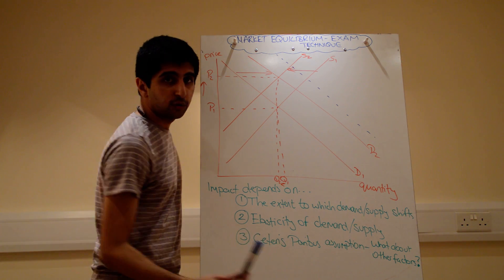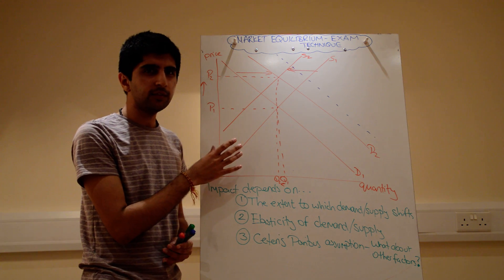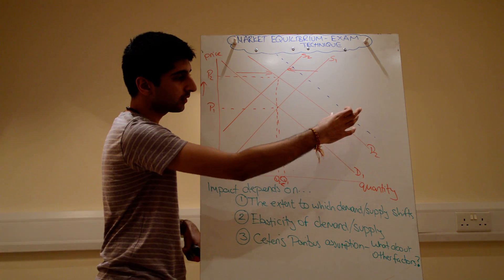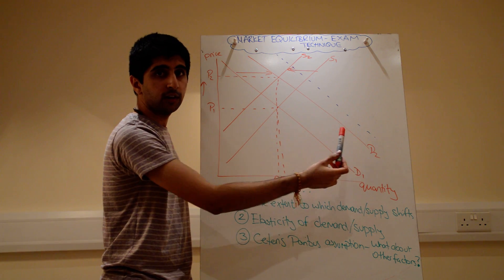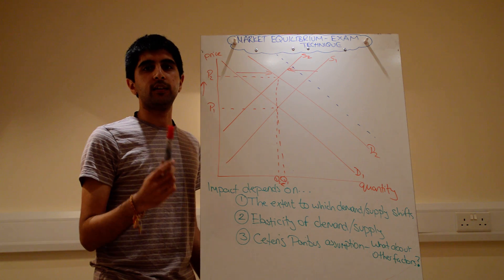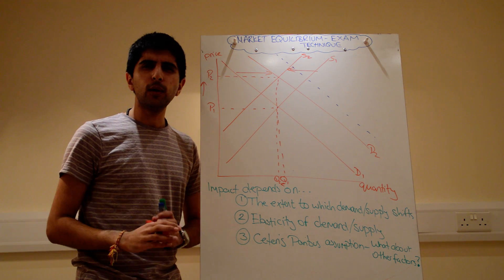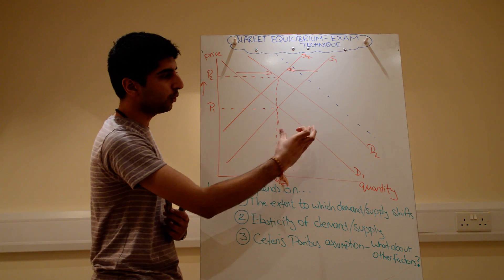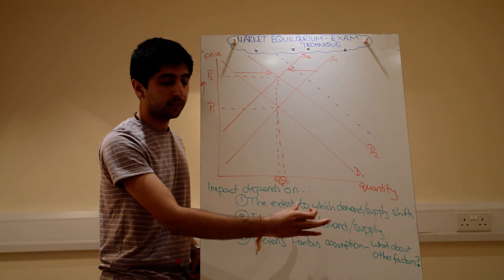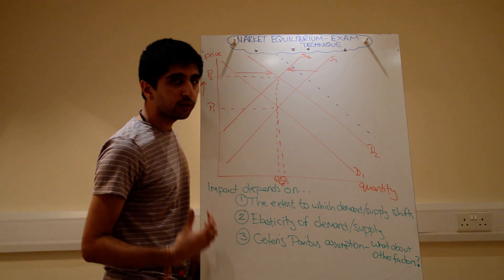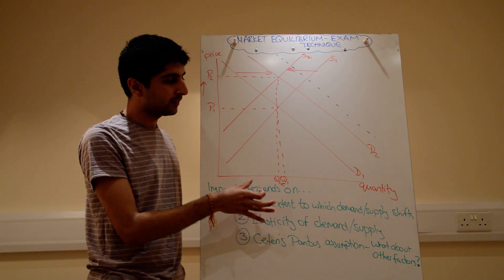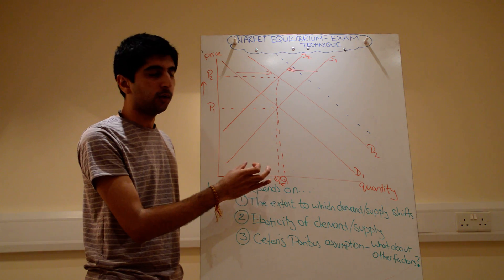The last evaluation point: we've kind of assumed ceteris paribus here. Even though we think we've dropped it because we're shifting curves, we're actually only isolating these two effects — the one factor that shifted demand to the right, maybe advertising, and the one factor that shifted supply to the left, maybe a rise in commodity prices. What about all the other factors that could have affected supply and demand? We've neglected those. The extent to which demand and supply shift also depends on the effects of those other factors.